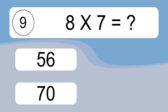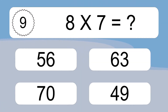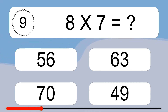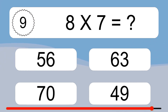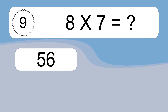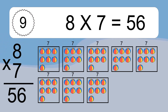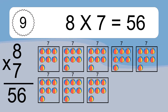8 times 7 equals what? We have 8 boxes, and each box has 7 colorful balls inside. If you count all the balls in all the boxes together, you will have 8 times 7 balls. This equals 56 balls.